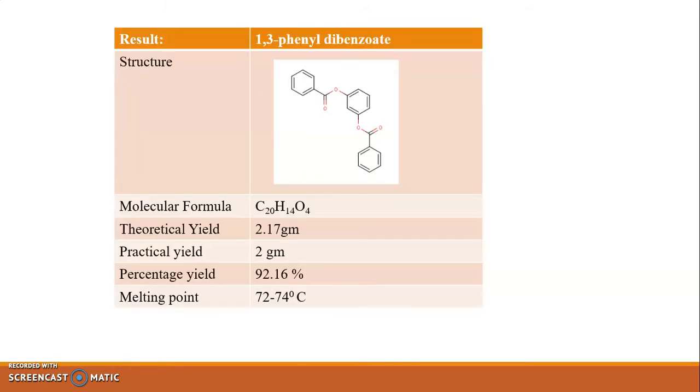This is the representation of result of the structure. It contains the molecular formula, theoretical yield, practical yield, percentage yield, and the melting point of the given substance or the synthesized compound or the derivative of the phenol.